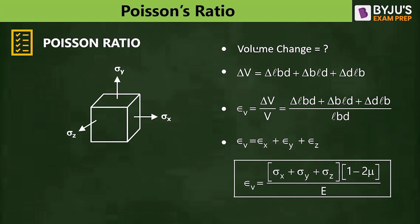Adding all the strain expressions together gives volumetric strain = (σ_x + σ_y + σ_z)(1 − 2μ) / E. If the sum of σ_x + σ_y + σ_z is positive, the volume increases; if negative, the volume decreases. The term (1 − 2μ) is always positive because μ cannot be greater than 0.5, so (1 − 2μ) remains positive.